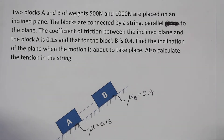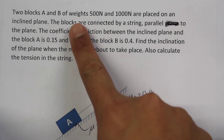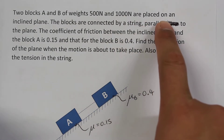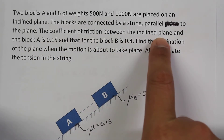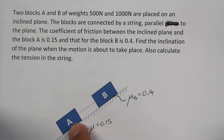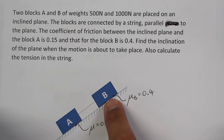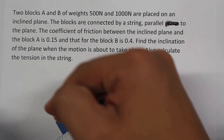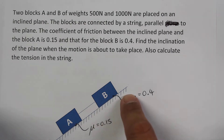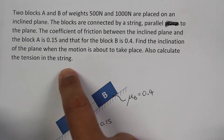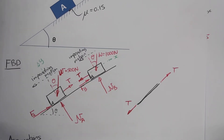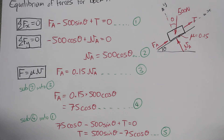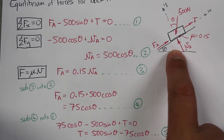Hi guys, this is the third video going through the solution of this question. Two blocks A and B of weights 500 Newtons and 1000 Newtons are placed on an inclined plane. The blocks are connected by a string parallel to the plane. The coefficient of friction for block A is 0.15 and for block B is 0.4. We want to find the angle where motion will start to take place, and we're also asked to calculate the tension in the string. So far we have created the free body diagram for the system and also a system of equations for block A.